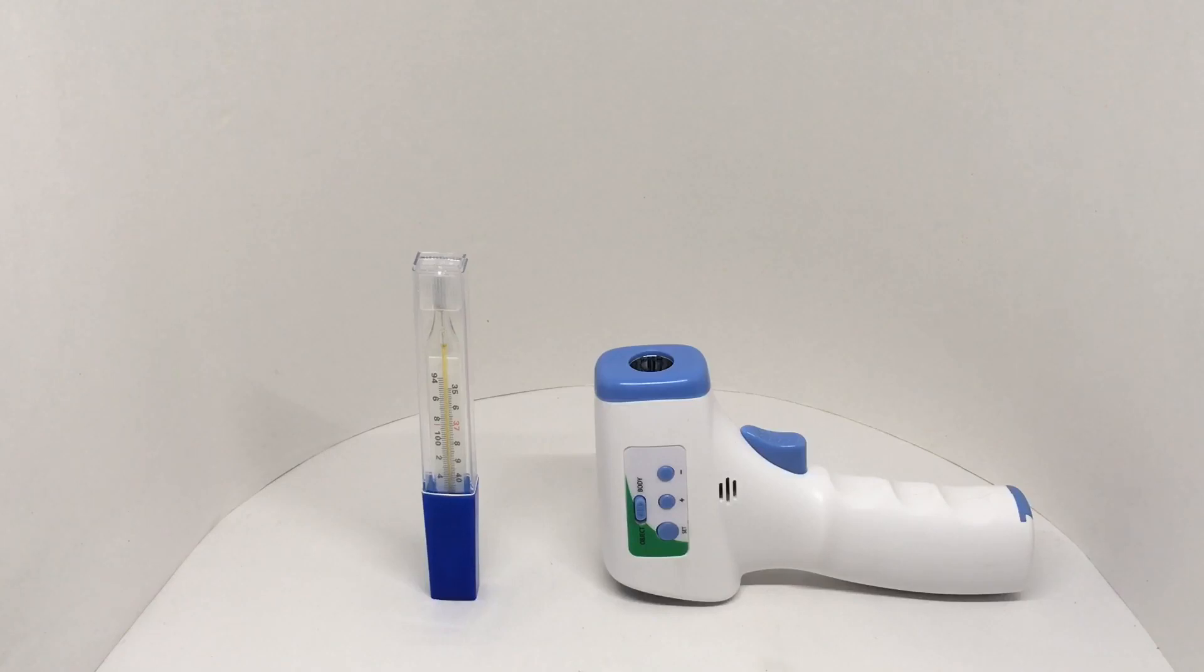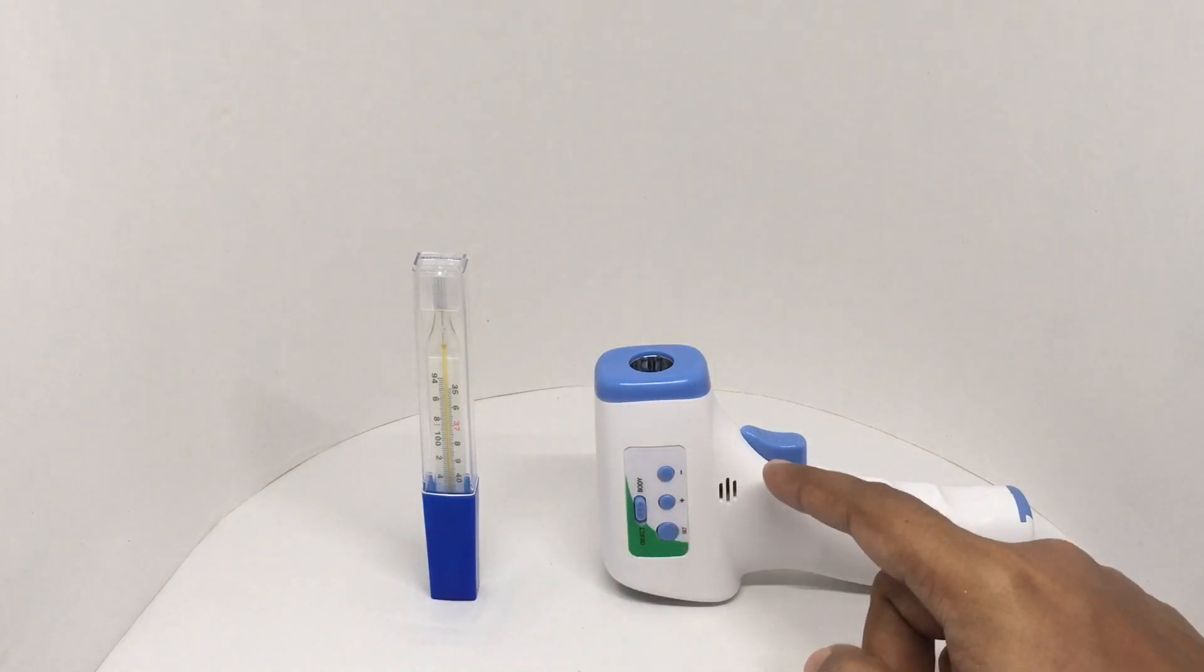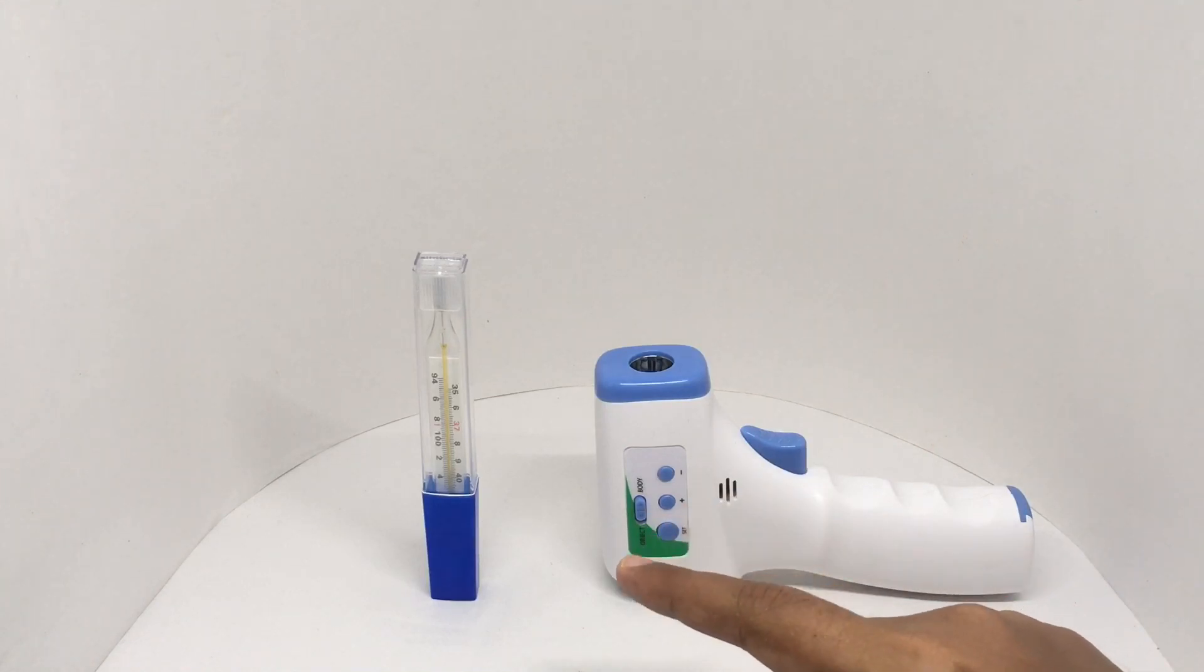Let's take a look at this cheap versus costly series where we compare two products at different price points. These are thermometers - one is a regular thermometer, this is an infrared thermometer. The cheap one costs around 100 rupees or a dollar and 50 cents.